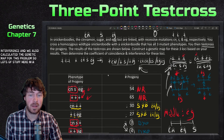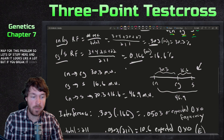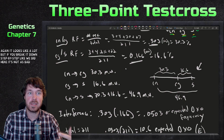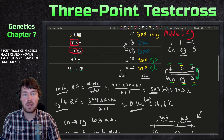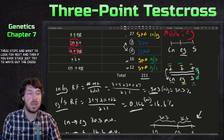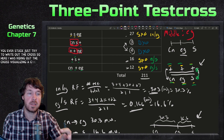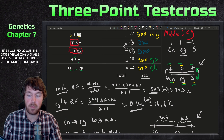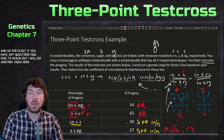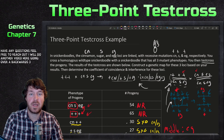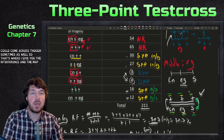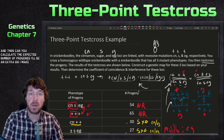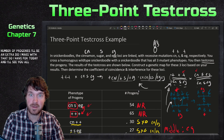So we've constructed the genetic map and calculated the interference for this problem. It looks like a lot, but if you break it down step by step it's manageable. Three-point test crosses are all about practice — know the steps and what to look for. I'll also make a video on the backwards three-point test cross, where you're given the interference and map and calculate the expected number of progeny. Thanks for watching, bye!